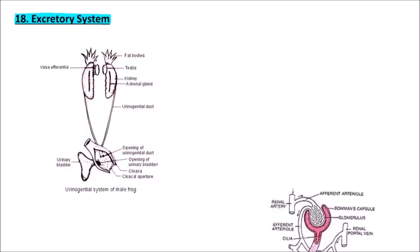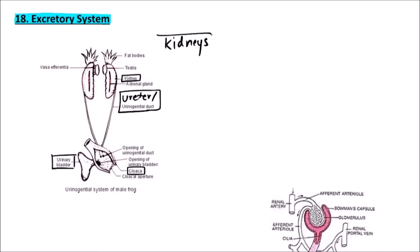Welcome to Studio Biology. In this video we are going to discuss the excretory system of frog. It consists of kidney, ureter in females or urinogenital duct in males, cloaca, and urinary bladder. First of all, we'll discuss the kidneys.